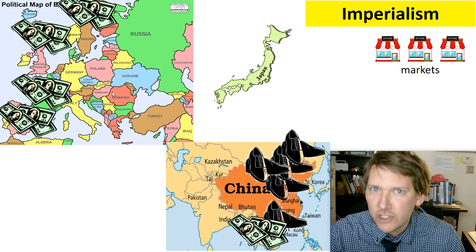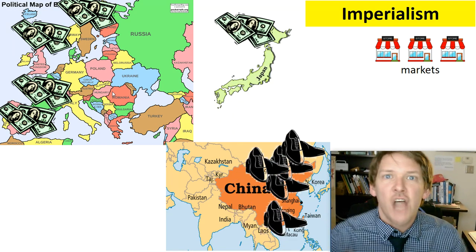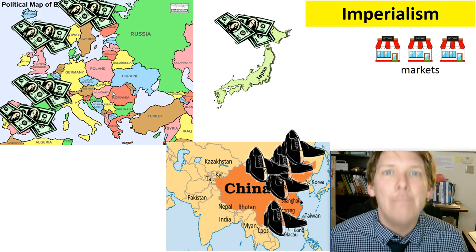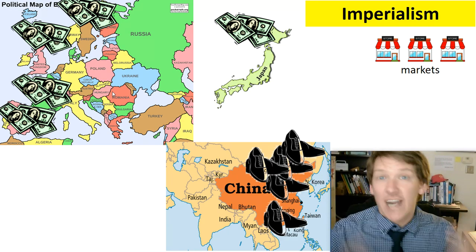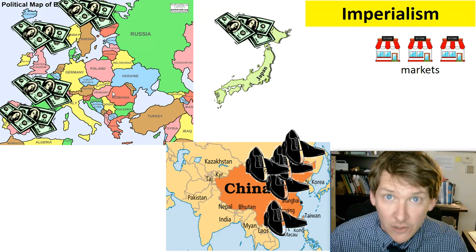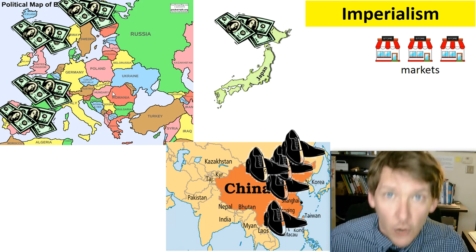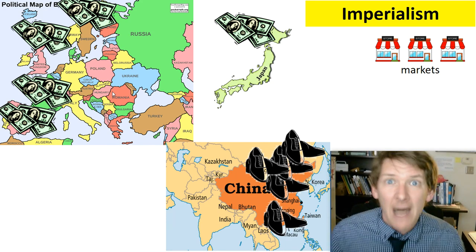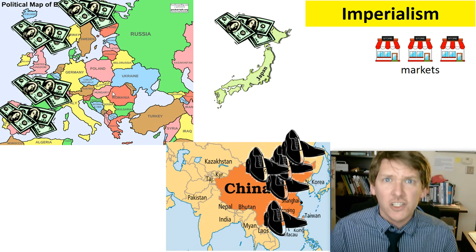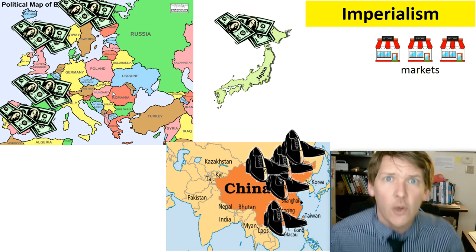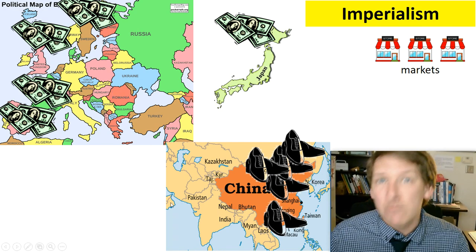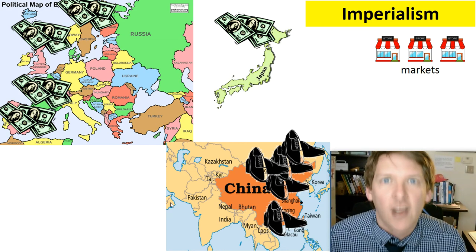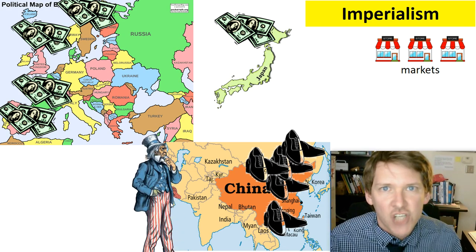China is buying all the shoes from other countries, which means China's not making their own shoes. That means no shoe factories, no shoe factory employees, Chinese people are not making money, and if you don't make money, you starve to death. With all the money going out, there's less money for a Chinese military, which means even more countries are going to come in and bully and take advantage of China.